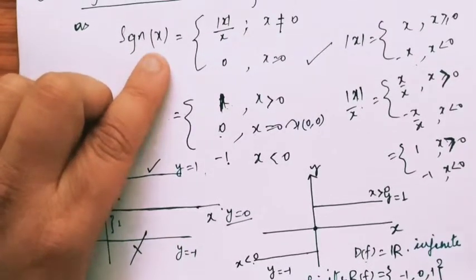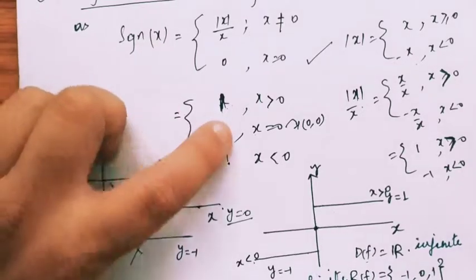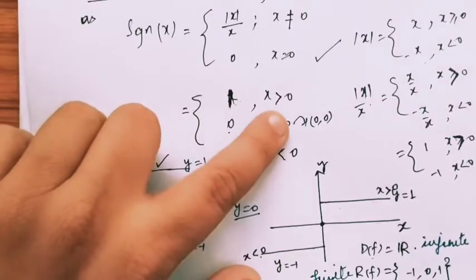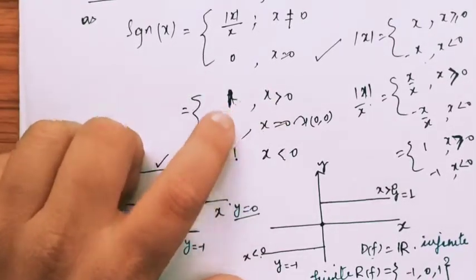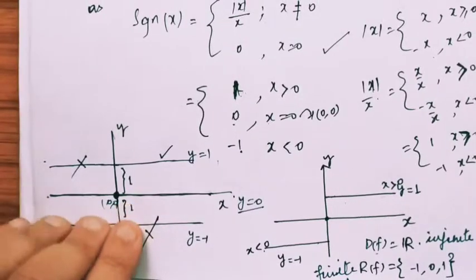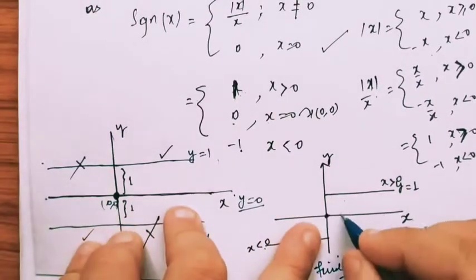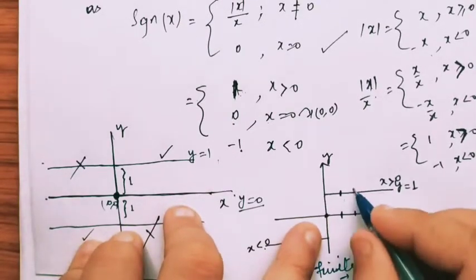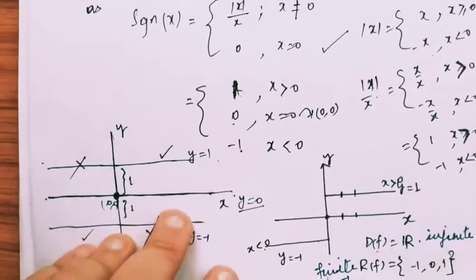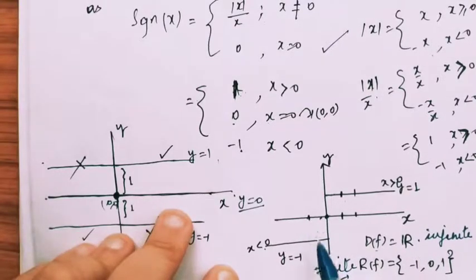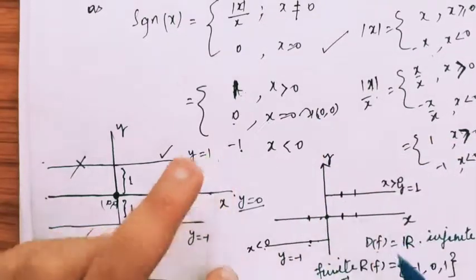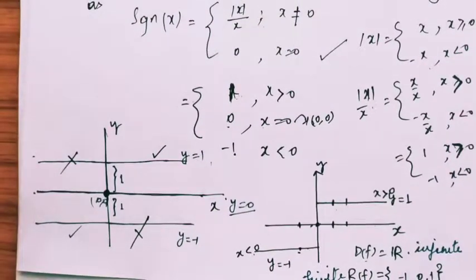For example, if you want to calculate signum of 1, then signum of 1 will give you 1, because X is positive, therefore it gives you 1. At X equal to 1, the value of the function is 1; at X equal to 2, the value is also 1. Similarly, at X equal to minus 1, the value of the function is minus 1. By using this definition you can predict and get the value of the function at any point.